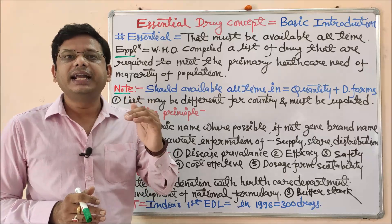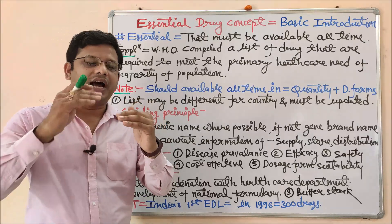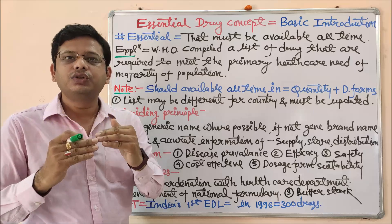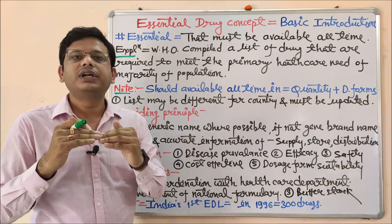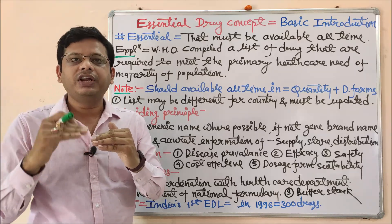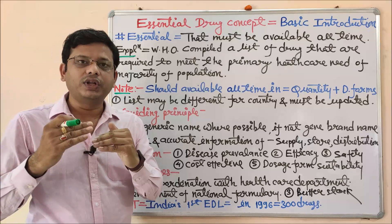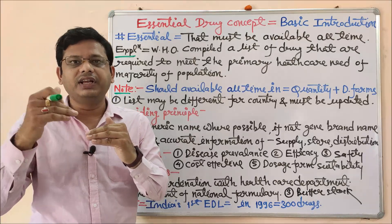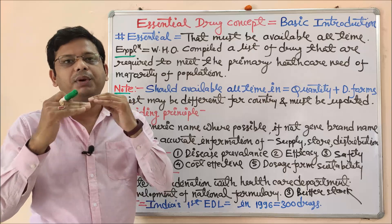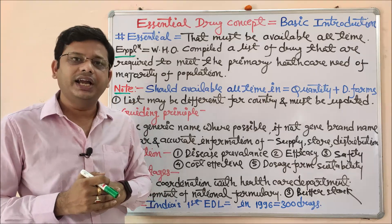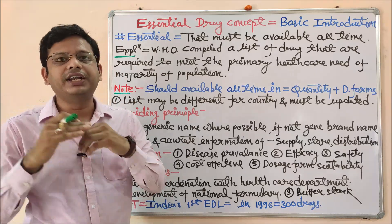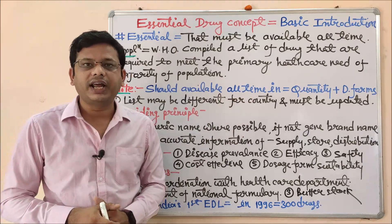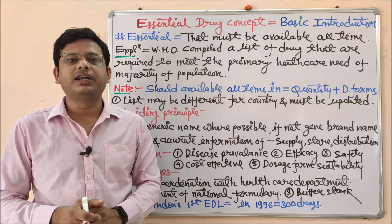Before the stock reaches the buffer level of 10, say at 15, I should order that drug so that after distributing and receiving the new stock, my minimum quantity is maintained at 10 or above at any cost and at any time. That is called buffer stock. The proper dosage form is also important — for example, paracetamol is required to treat pyrogenic infections and fever, but patients may be of different age groups: children, adults, and geriatric.